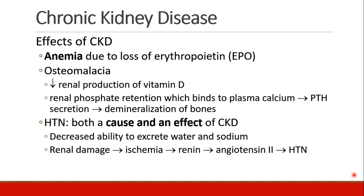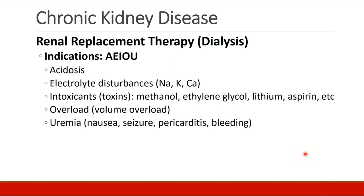As they lose their ability to excrete water and sodium, they become hypertensive. Furthermore, renal damage and ischemia leads to renin secretion, which leads to more angiotensin II, which leads to more hypertension. Renal replacement therapy or dialysis has a few clear indications you can remember with the mnemonic AEIOU: A is for acidosis; E is for electrolyte disturbances, commonly sodium, potassium, or calcium; I is for intoxicants or toxins — methanol, ethylene glycol, lithium, aspirin, and other drugs; O is for overload, as in volume overload; and U is for the symptoms of uremia, which include nausea, seizures, pericarditis, and bleeding from platelet dysfunction.